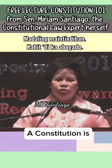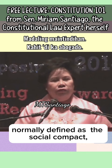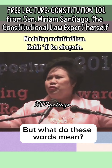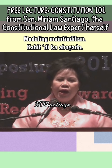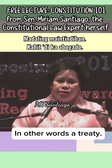A constitution is normally defined as the social compact, the fundamental law of the land, the supreme law of the land, the paramount law. But what do these words mean? Words are only symbols so that we can communicate with each other. Behind every word is an idea. So what is the basic idea of a constitution? A constitution is a social compact — in other words, a treaty, even if unwritten, among people living together.